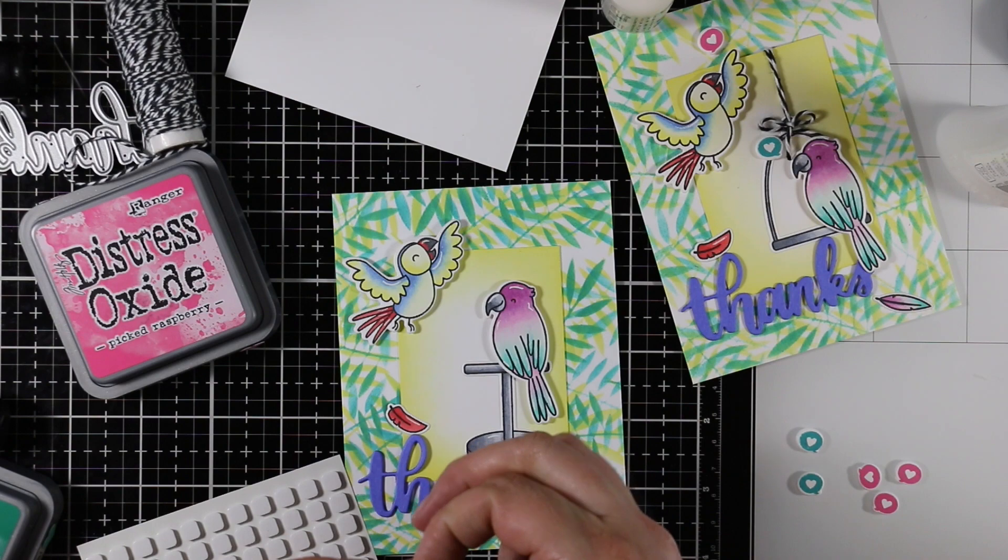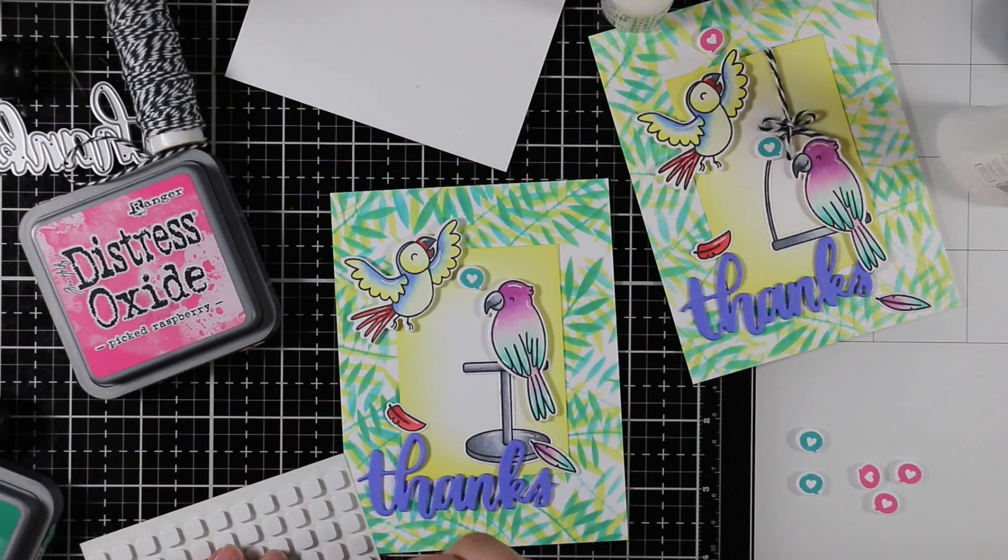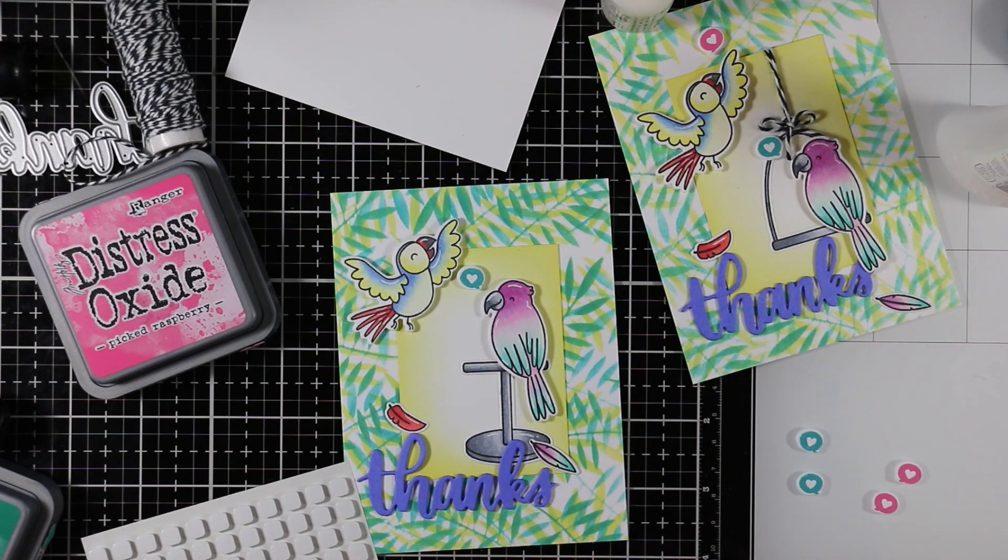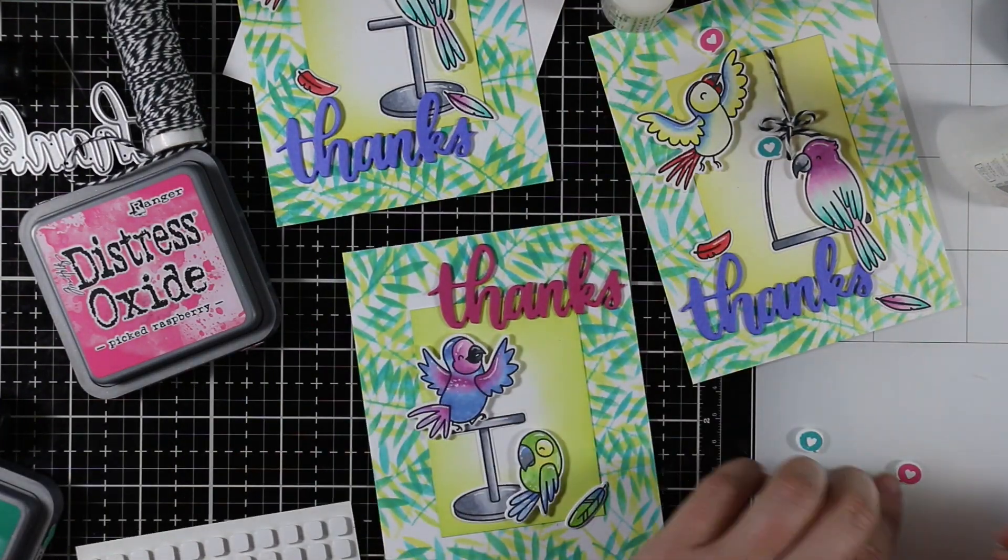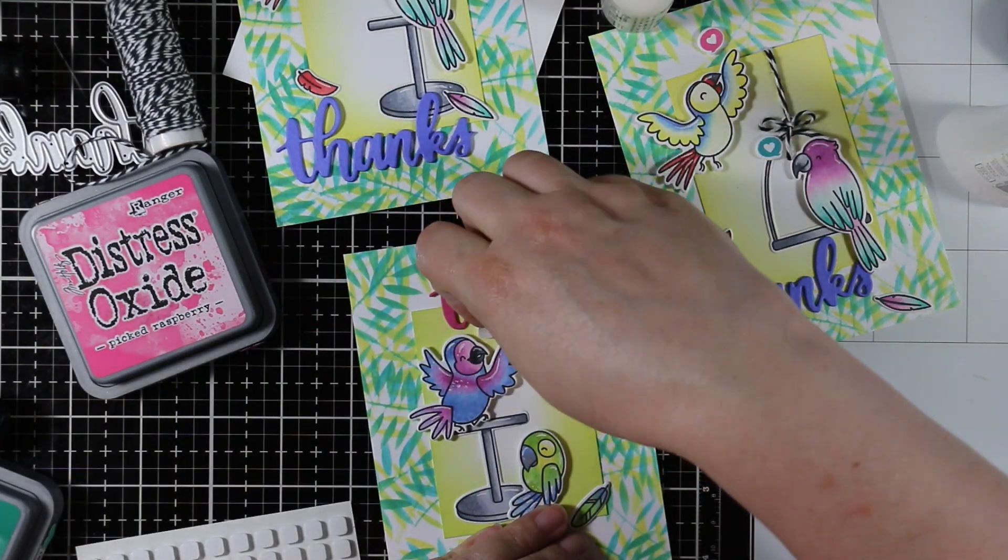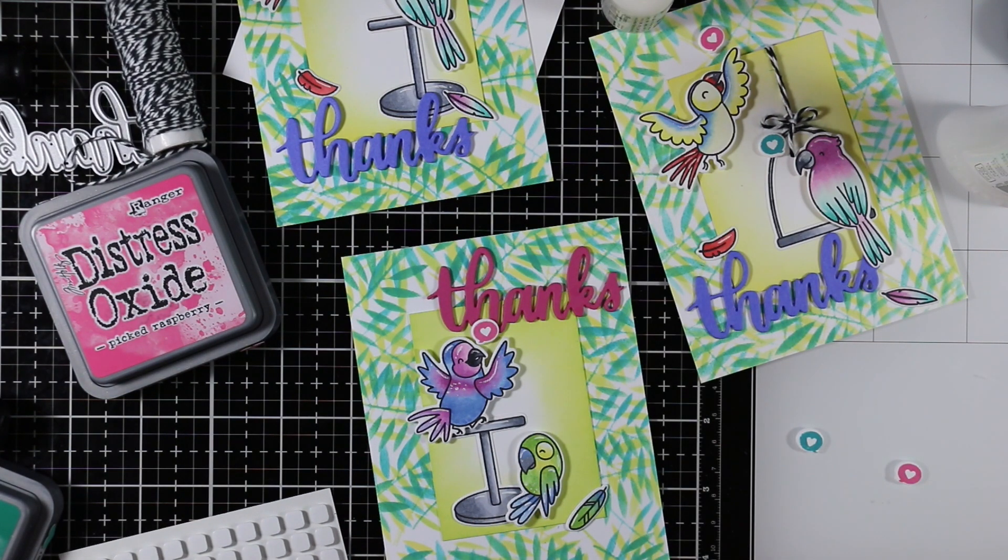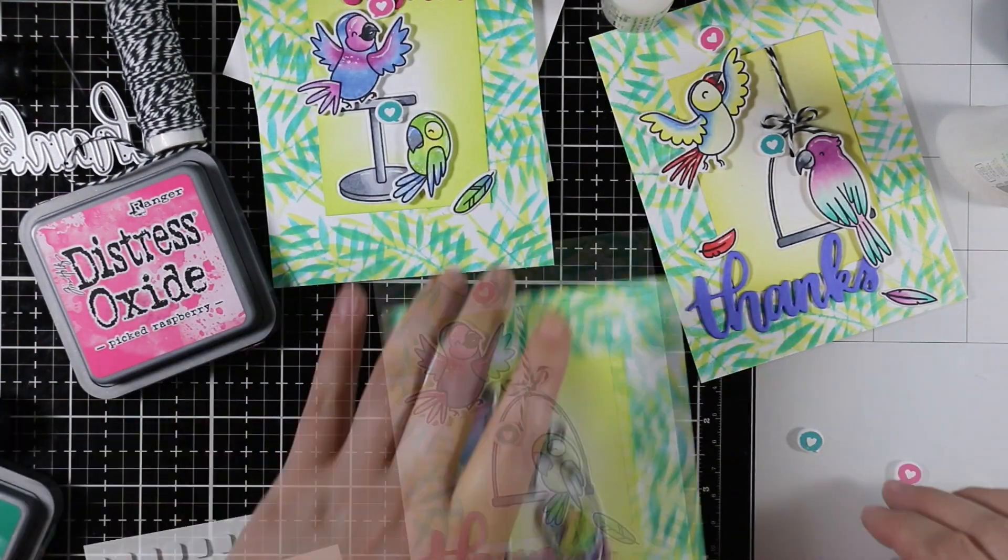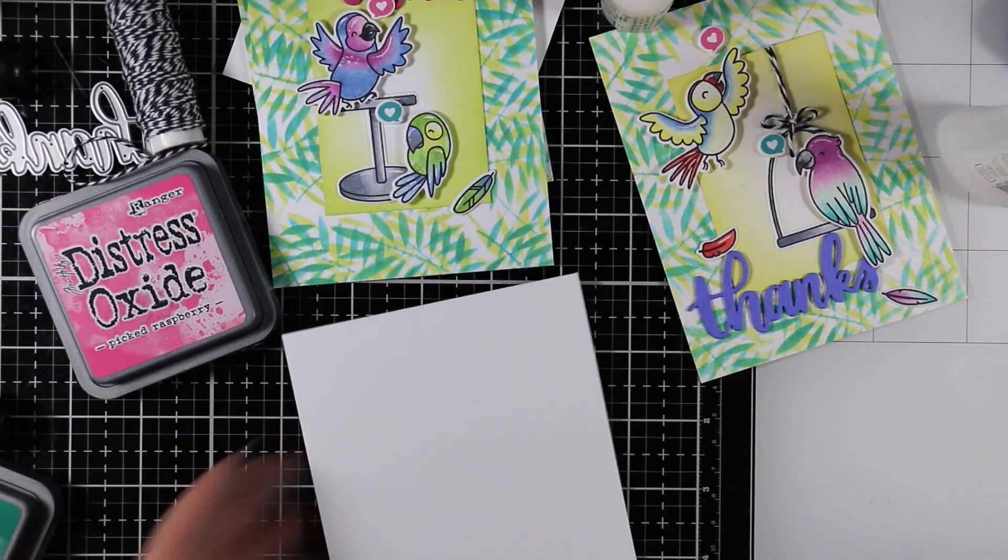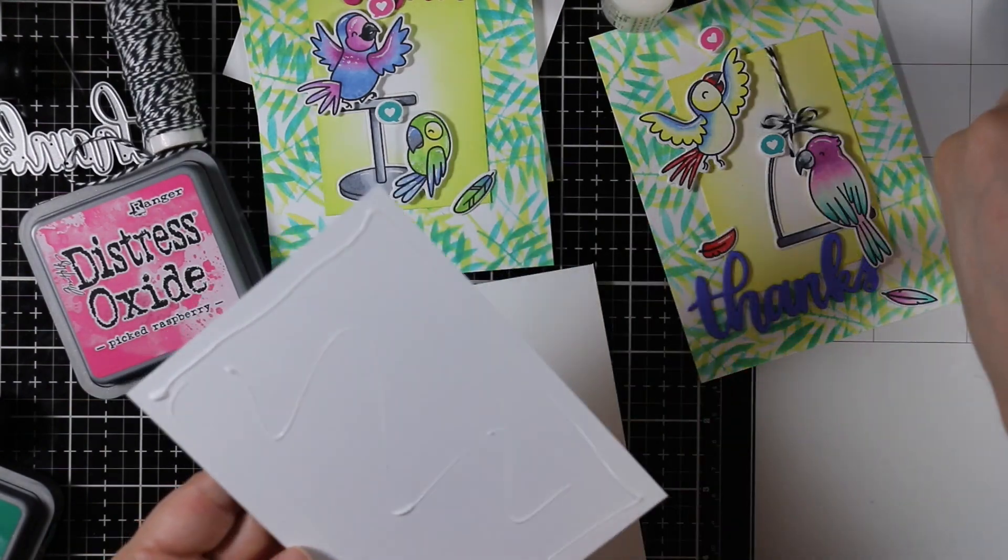Off camera I ended up stamping two little tiny speech bubble stamps in this set. I stamped them with Picked Raspberry distress oxide ink and the Peacock Feathers distress oxide and die cut them with their coordinating dies. They just happen to also fit perfectly with these little foam squares so it was quick and easy to adhere them so all the little birds are talking love to each other. I just thought that was really cute so I added those to all the cards as my only embellishment.